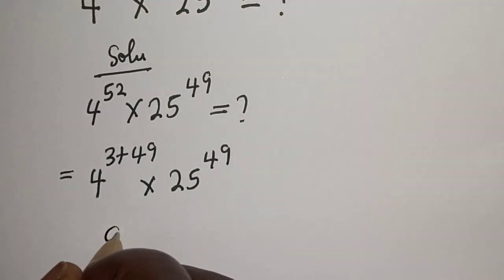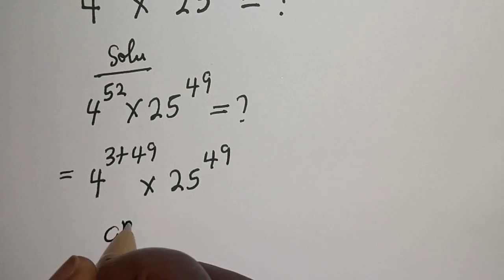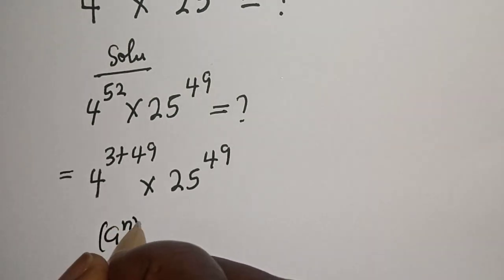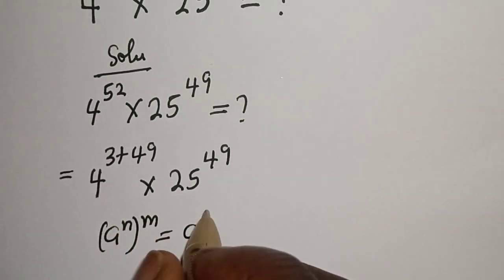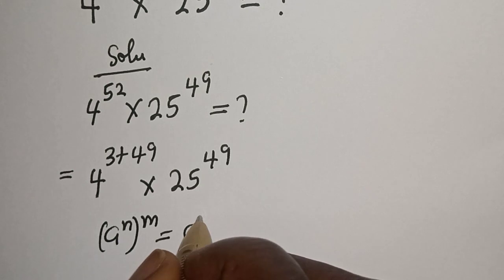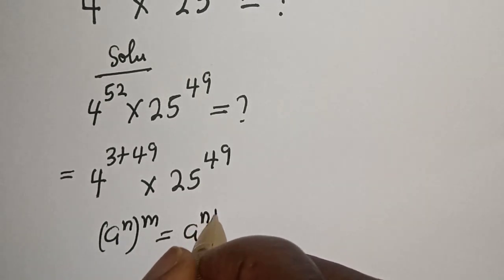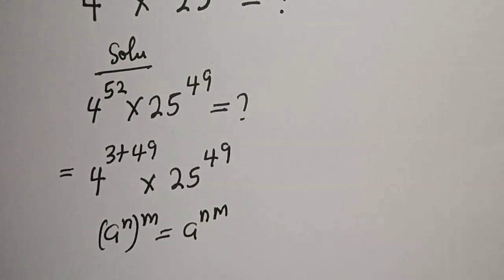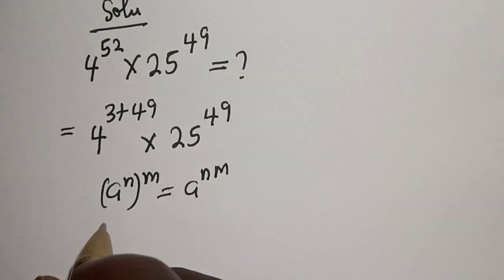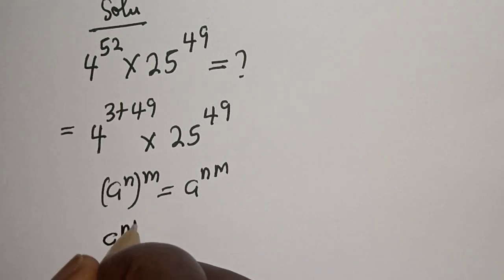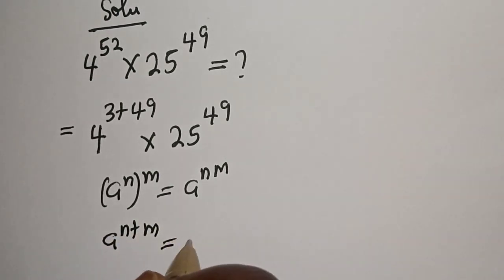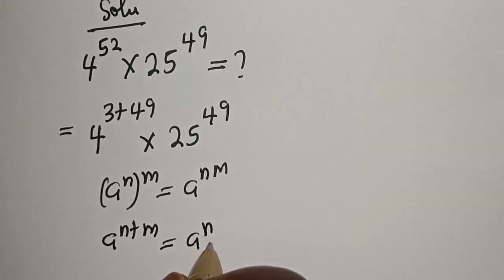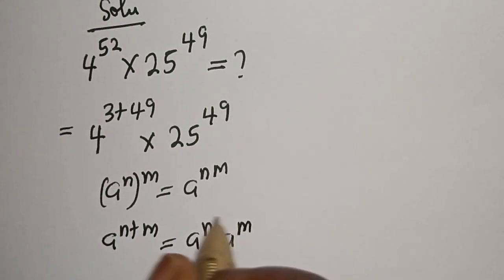If you have a raised to power n raised to power m, that is equal to a raised to power n×m. Also, if you have a raised to power n plus m, that is equal to a raised to power n multiplied by a raised to power m.